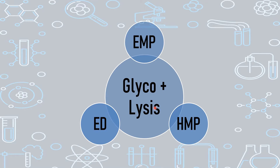When we say breakdown of glucose, it can be either complete or incomplete breakdown of glucose. The pathways are slightly different but the first pathway is common — it is usually the EMP pathway, which we will be looking into in detail today. There are also other methods of glycolysis or breakdown of glucose: those are the HMP and ED pathways, which we will look into in subsequent classes.